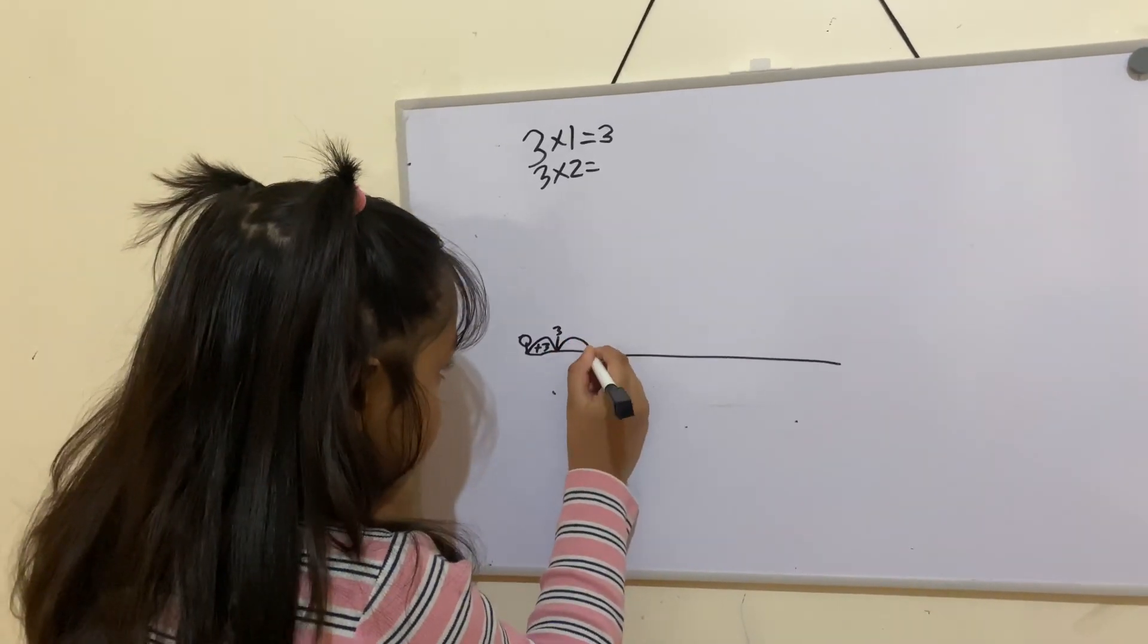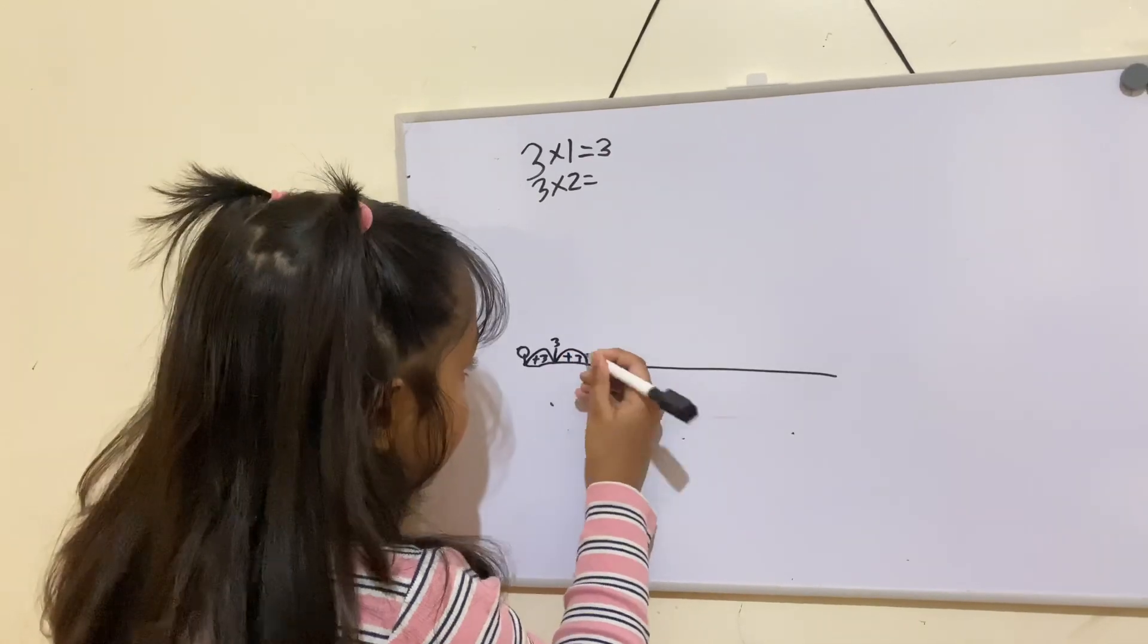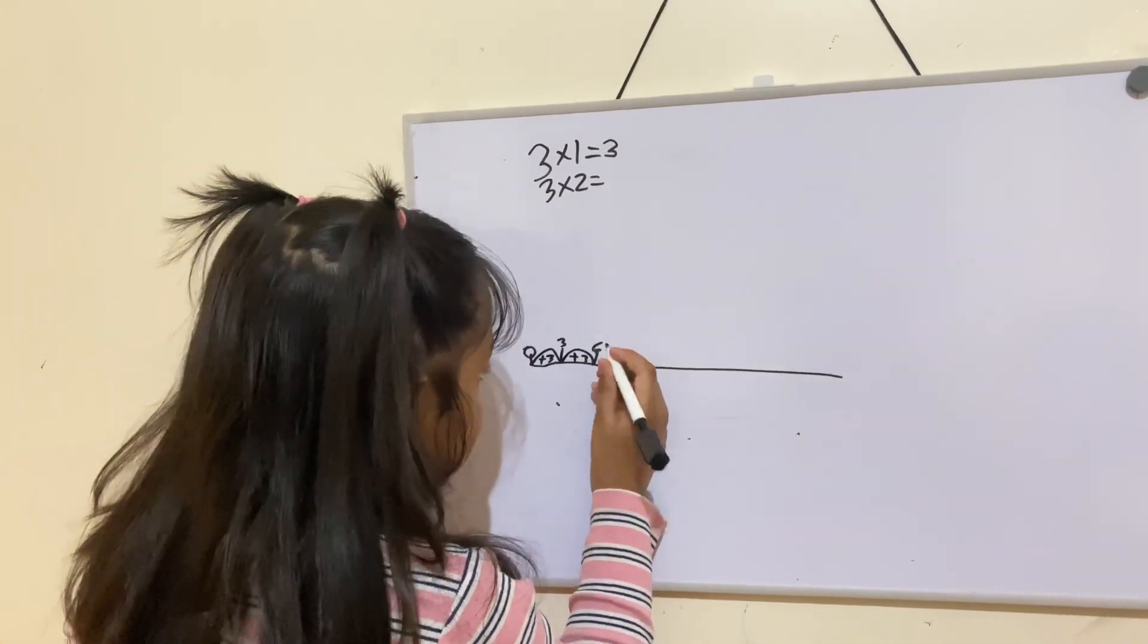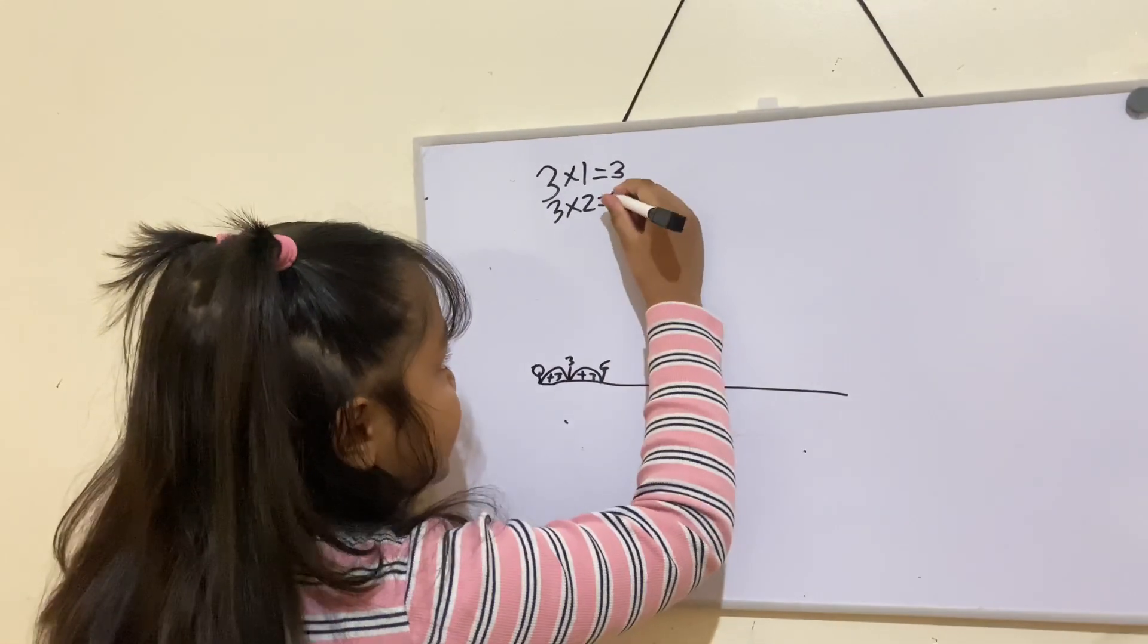So I'll do one more jump. Add 3 equals 6. And the answer is 6.